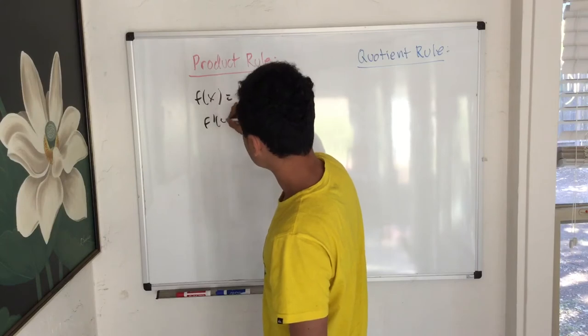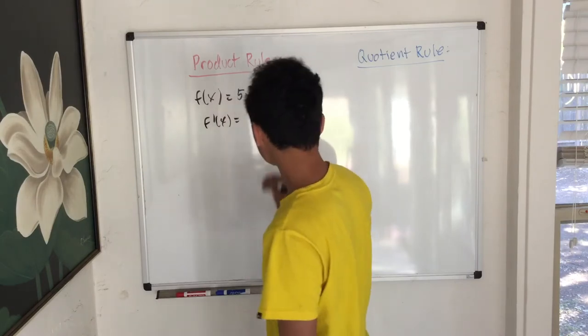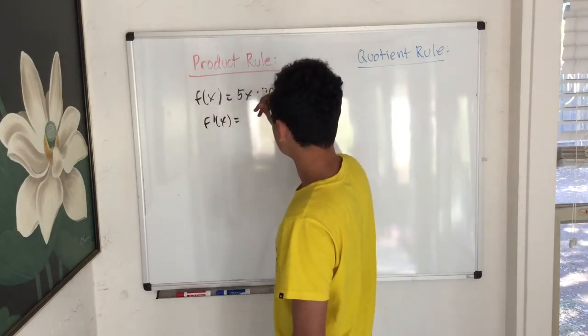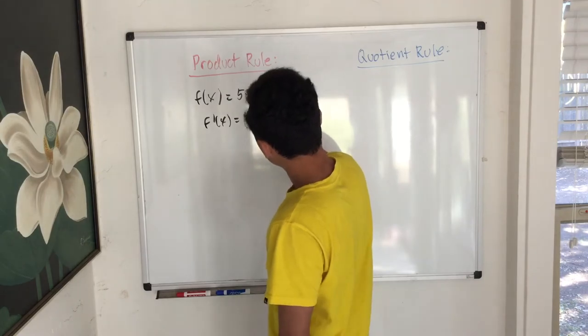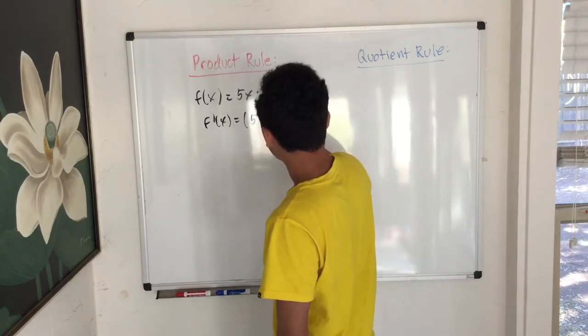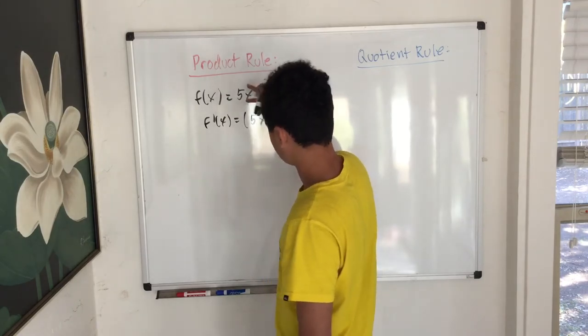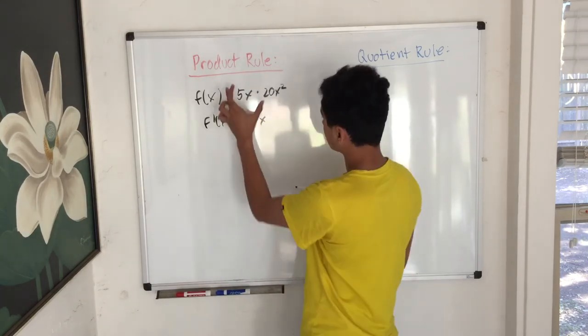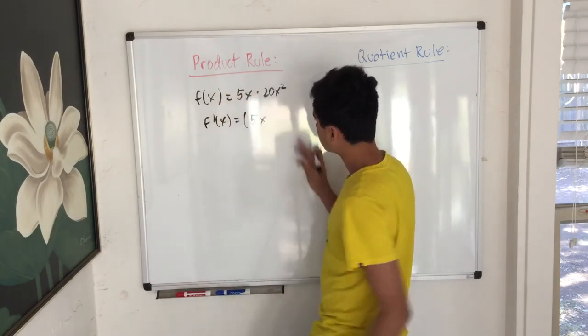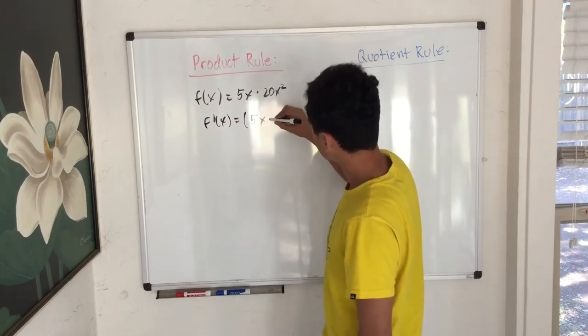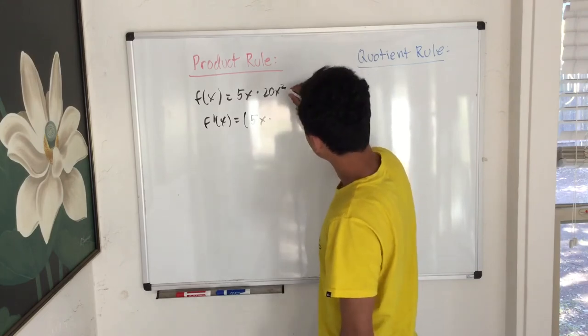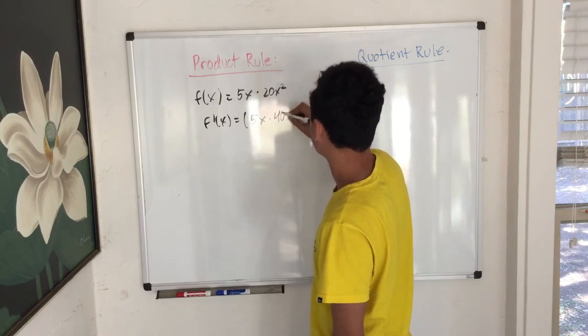So the way you're actually going to do it, it's actually fairly simple. What you're going to do is you're going to take 5x. We're going to take that value and keep it the same. We're going to keep that the same and we're going to take the derivative of this one, using the power rule. So when you find the derivative of this, it's going to equal 40x.